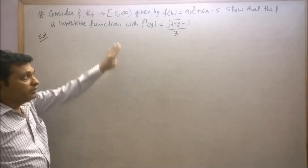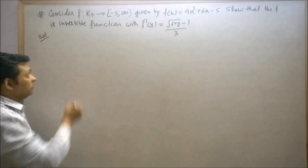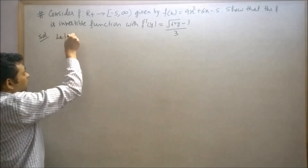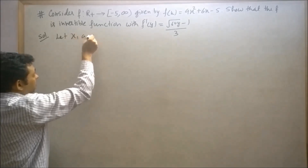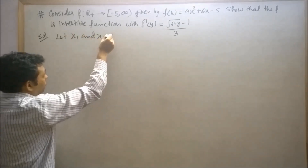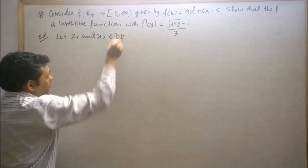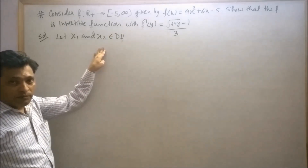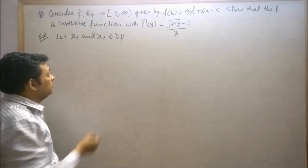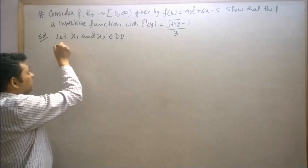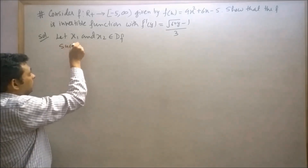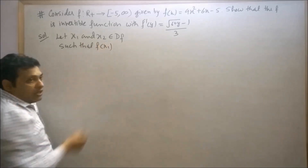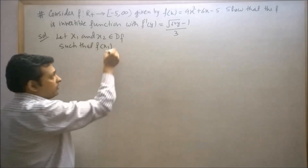So, let us try to prove that this function is a one-one function. Let x₁ and x₂ belong to the domain of f, so x₁ and x₂ are positive real numbers, such that f(x₁) = f(x₂).